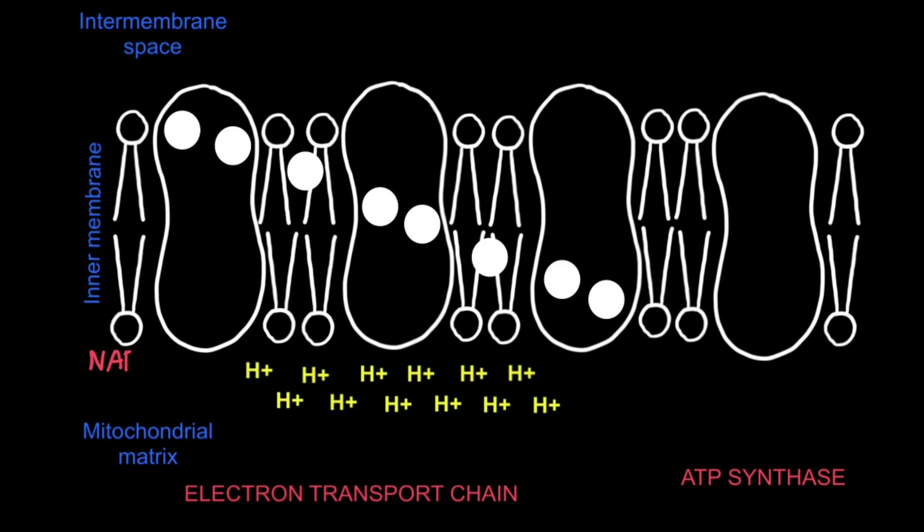On the inner membrane, NADH is first oxidised to NAD+, releasing two electrons, represented by E- here. Those electrons are picked up by the first electron carrier in the chain.